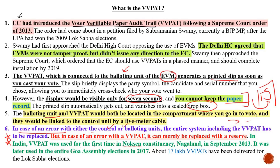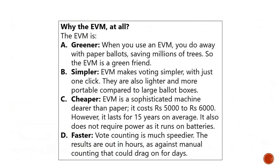VVPAT was used for the first time at the Noksen constituency in Nagaland in 2013 — a very important fact for prelims. It was later used in the entire Goa assembly elections in 2017 as well.